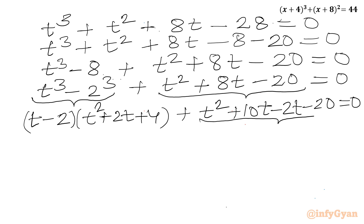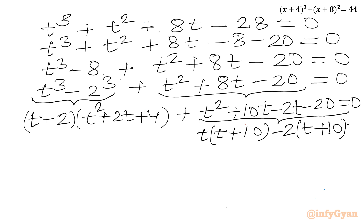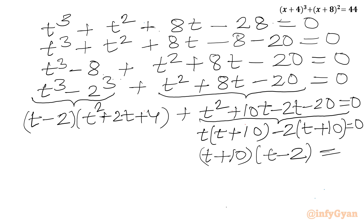From the quadratic t² + 8t − 20, we take t common from the first two terms to get t(t + 10), and take −2 common from the last two terms giving −2(t + 10). So we can take (t + 10) as overall common, giving (t + 10)(t − 2) = 0.